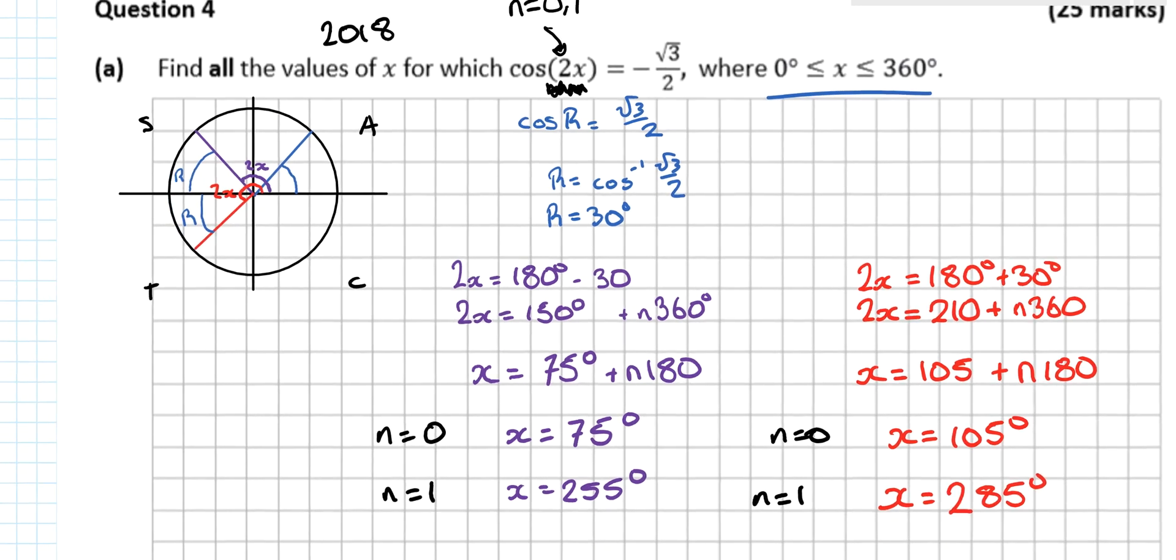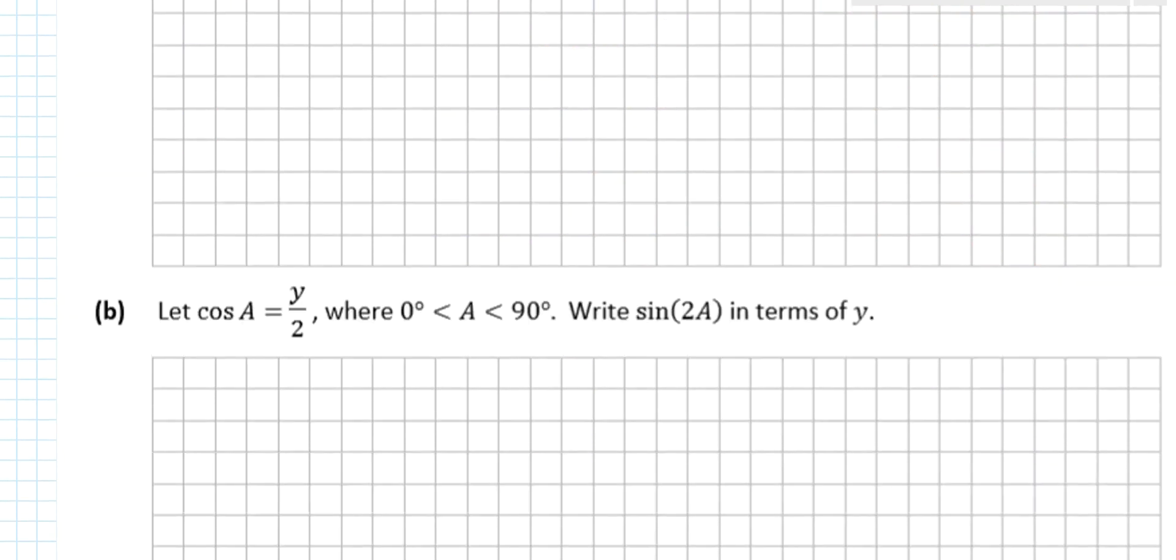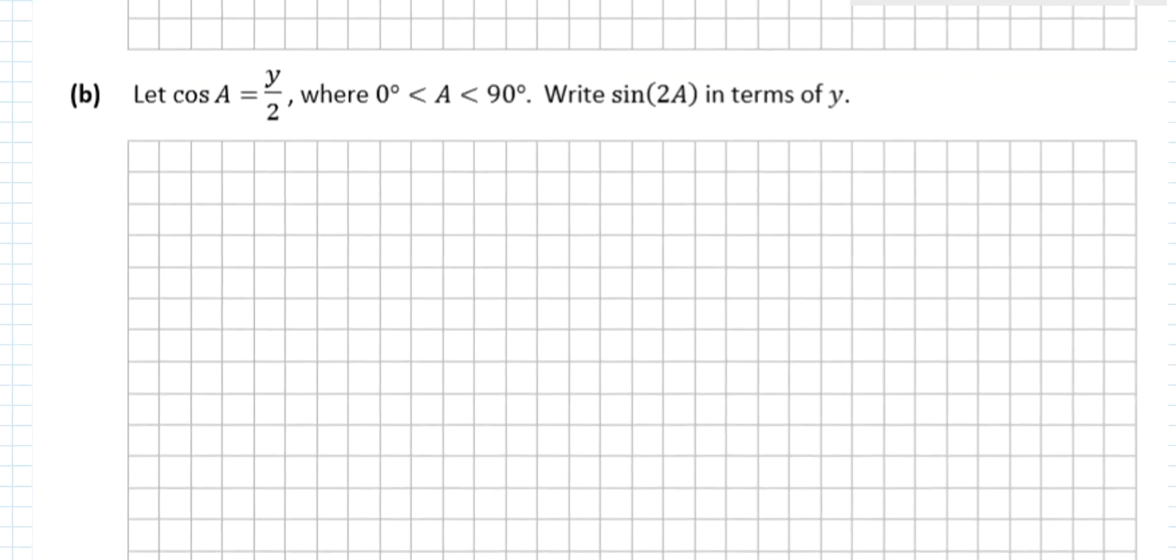A very typical question and a very nice question. The second part of the question is a little bit more unusual. So we know that cos A is equal to y over root 2 and we want to write sin(2A) in terms of y. So sin(2A) equals something with y's in it.